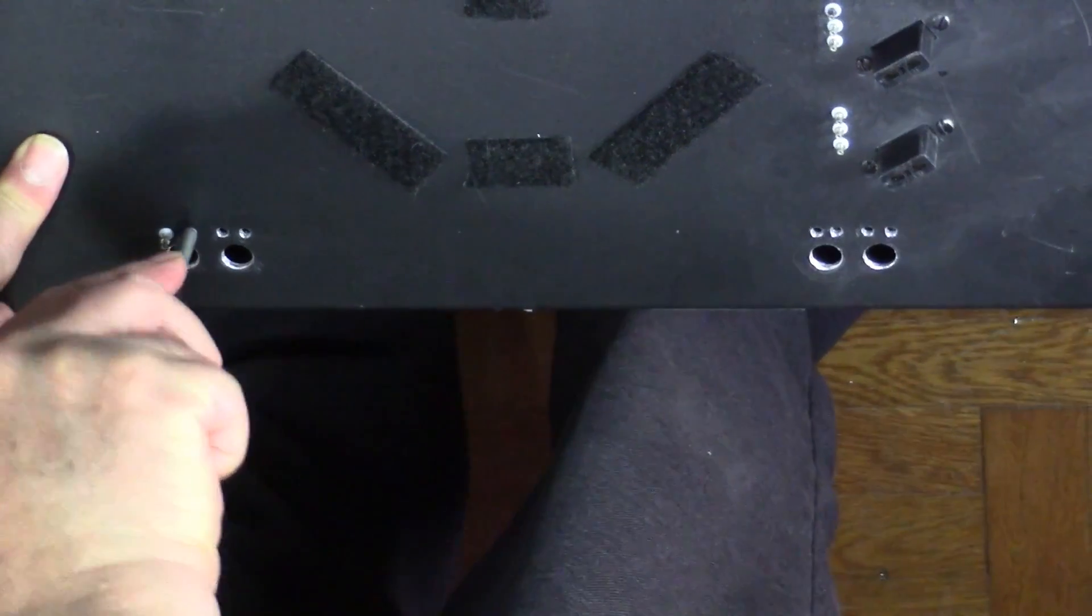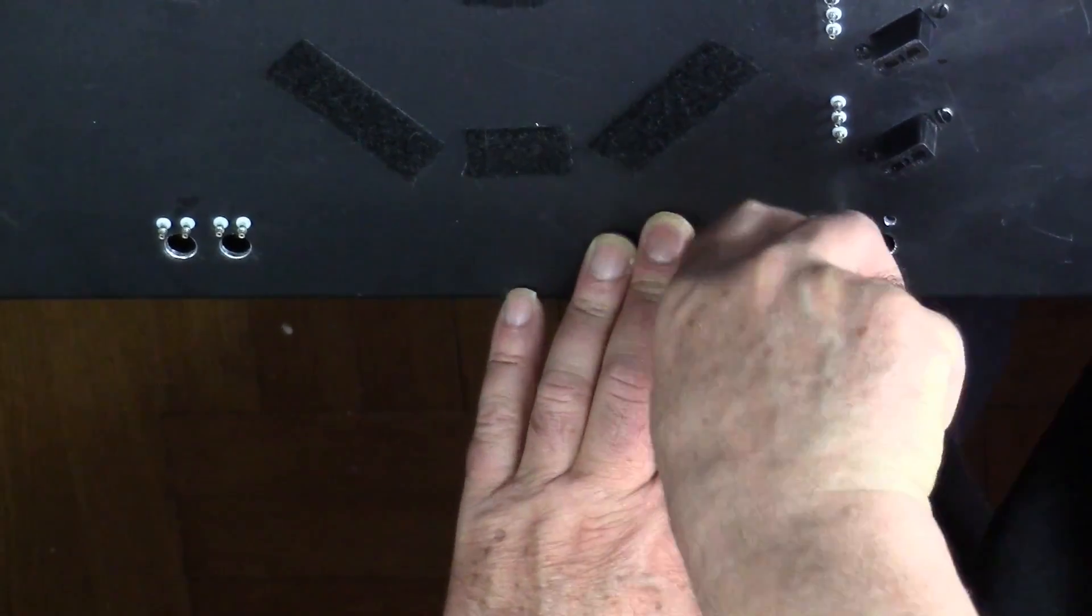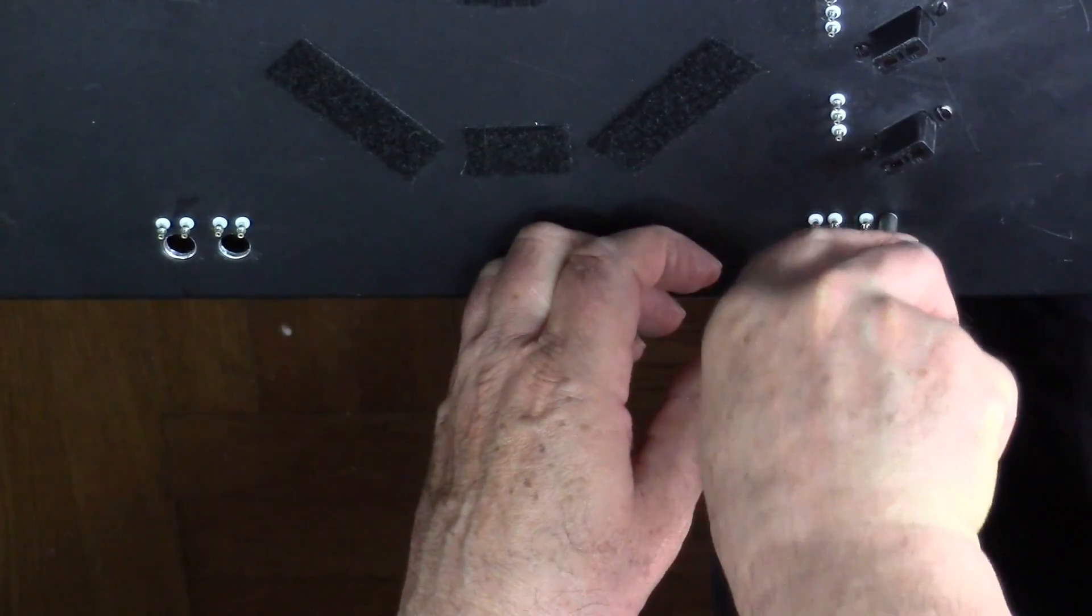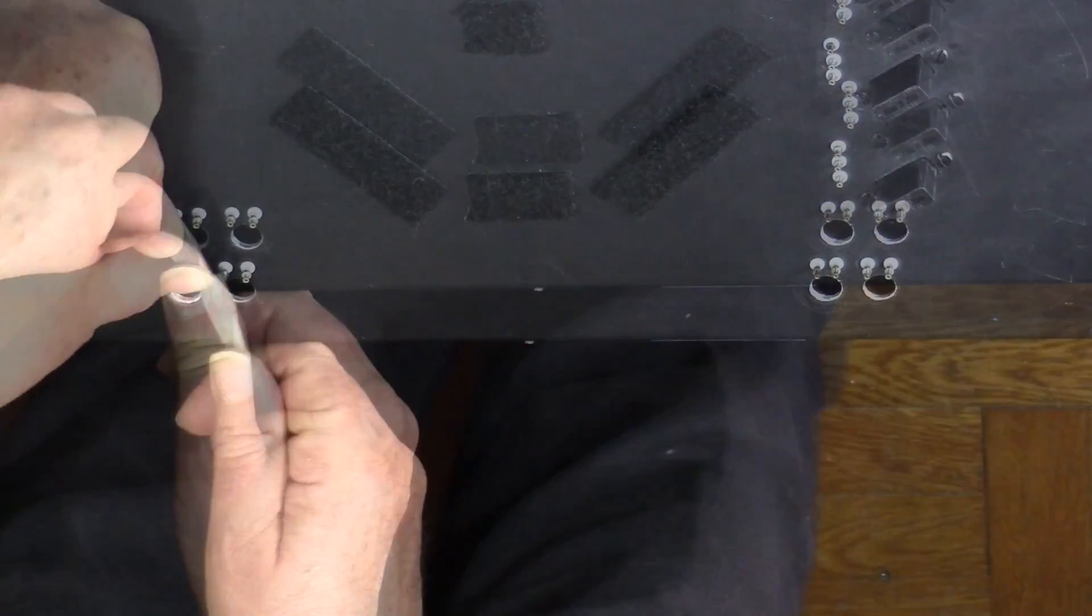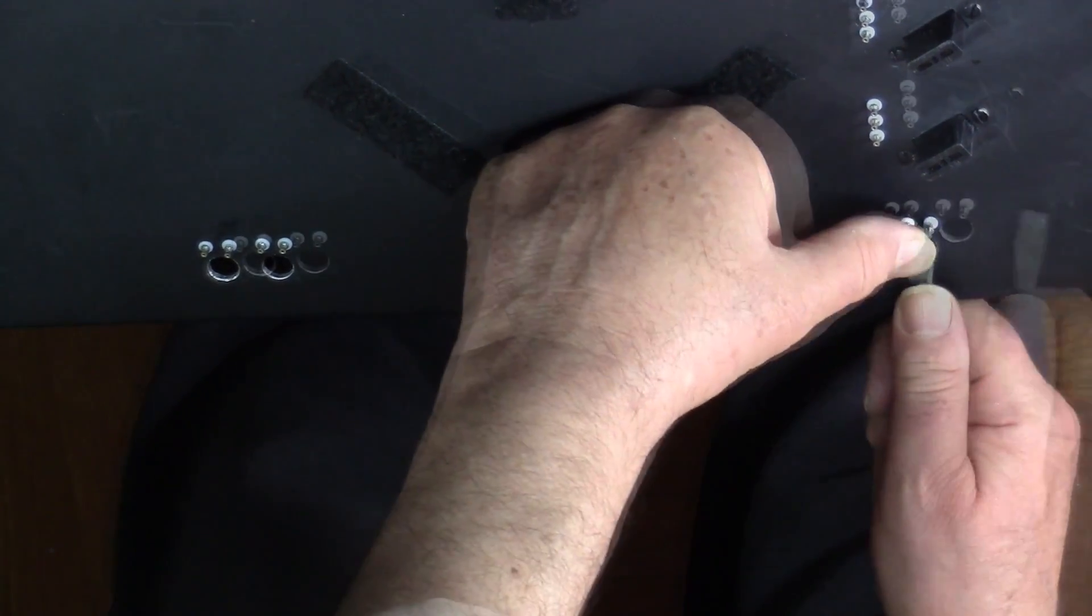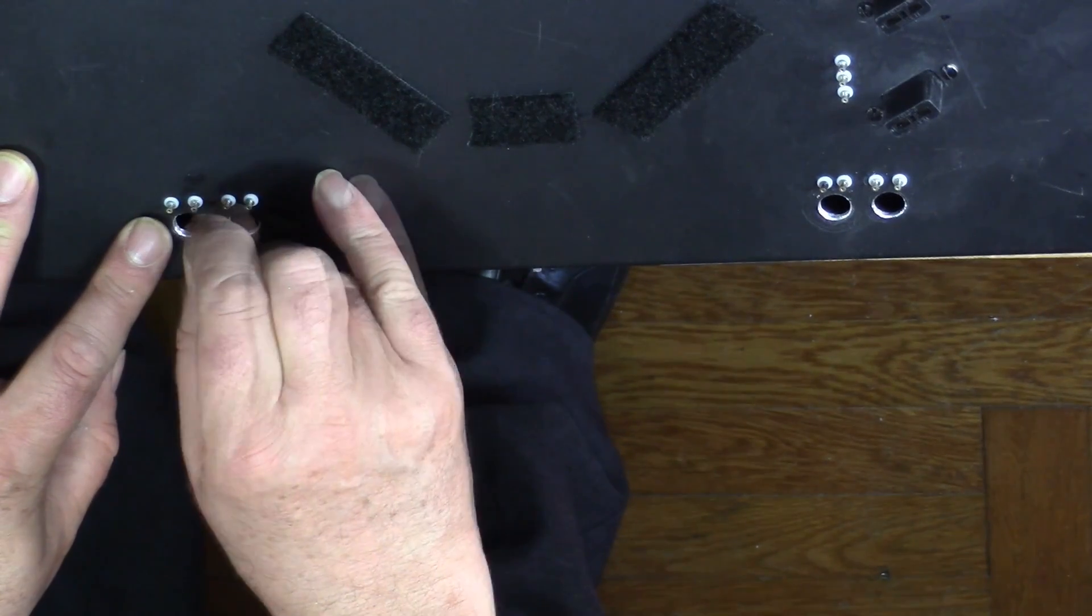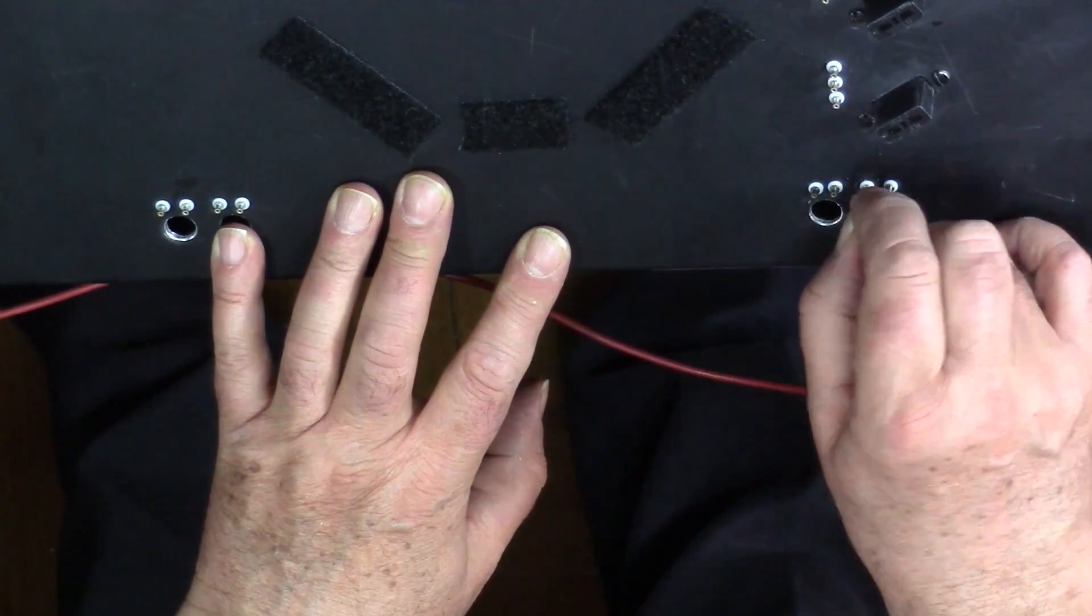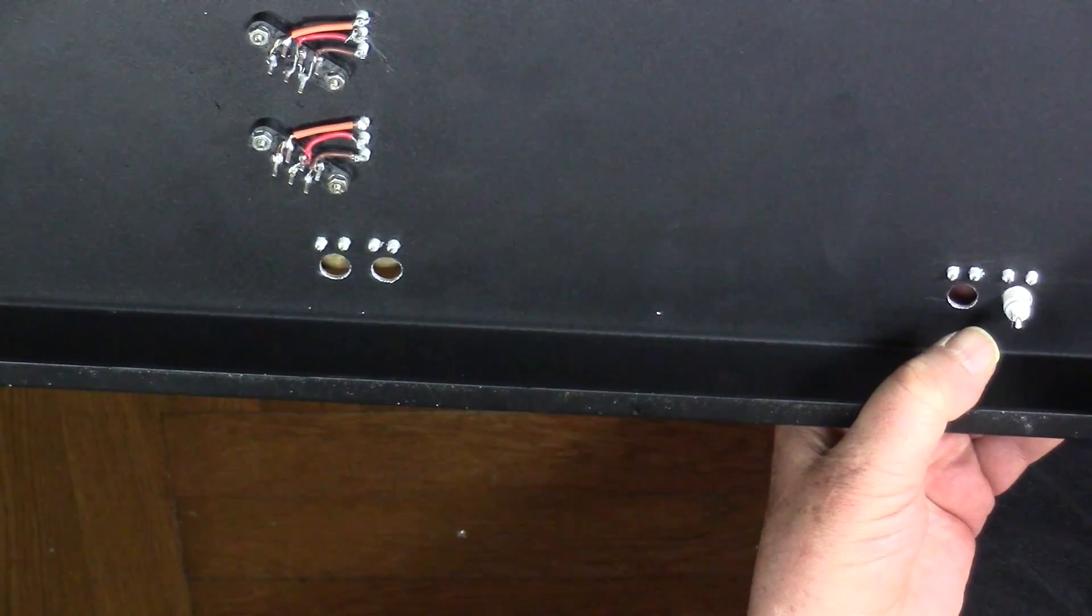Now we're going to press-fit these solderless feed-throughs. Two feed-throughs per BNC connection. One from the outside shell and one for the center conductor. I'm now pressing home the feed-throughs with a flat-head screwdriver. And I need to test these feed-throughs to make sure, in this case, my probe will fit in easily and I haven't distorted the feed-throughs. And having confirmed that, it's now time to install the BNC connectors.